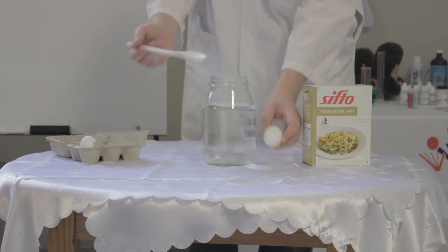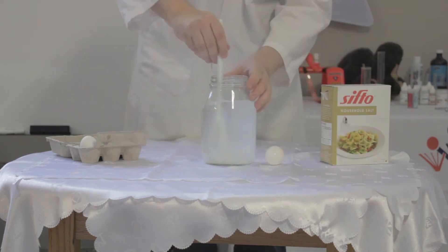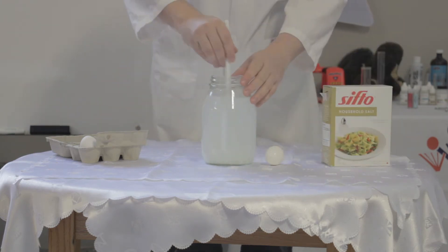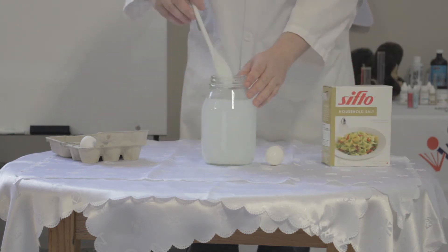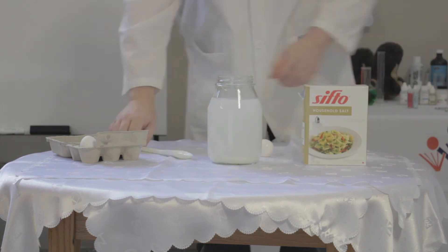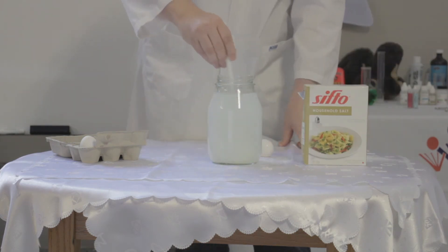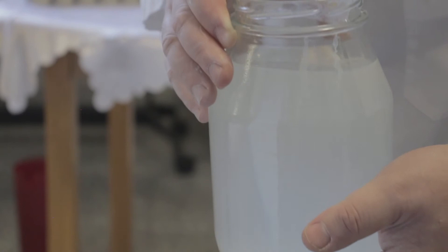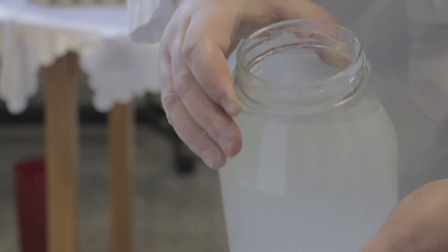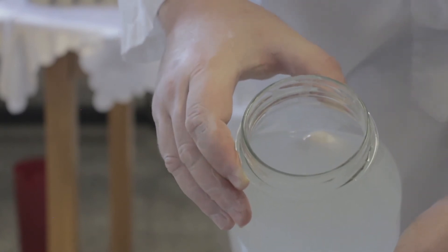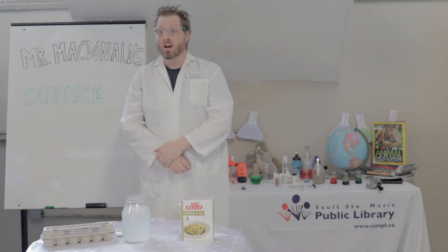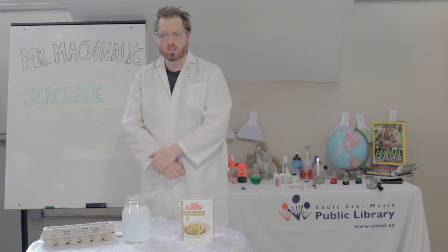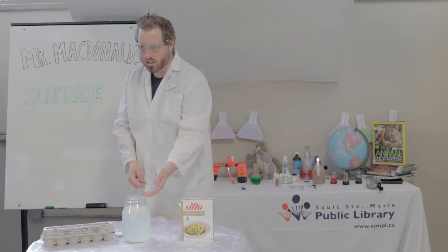Now, I will remove the egg and repeat the experiment, only this time I will add salt to the jar of water. Stir the salt so that it is fully dissolved into the water. As I put the egg back in, you can see that it floats. I have done nothing to the egg, only the material in which I immersed it.